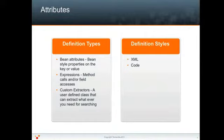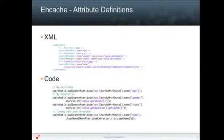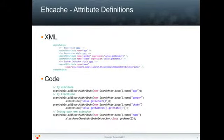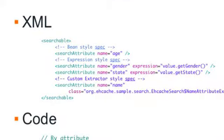These attributes are defined in your cache description, either in XML or in code. Here are examples of both. Notice in the expression style the use of the reserved word 'value' — this represents whatever is placed in the value portion of the element. 'Key' is a reserved word as well. The names associated with each attribute are how they will be accessed for use in queries.